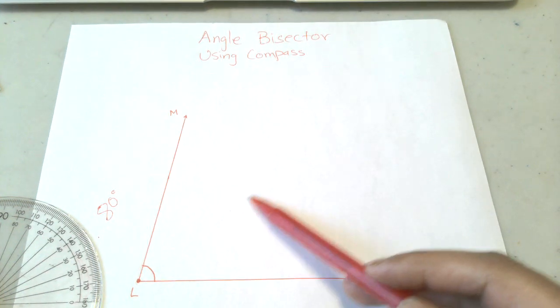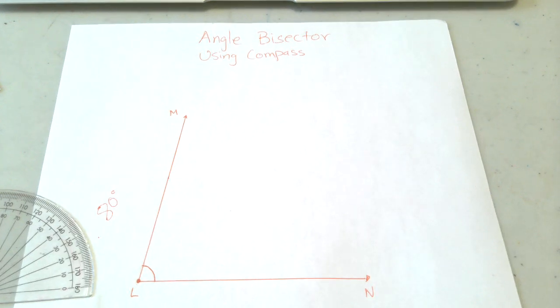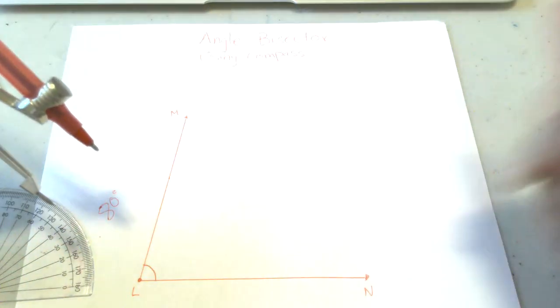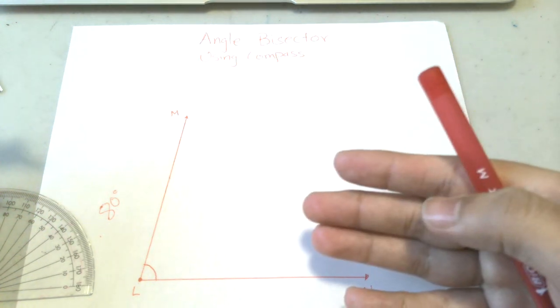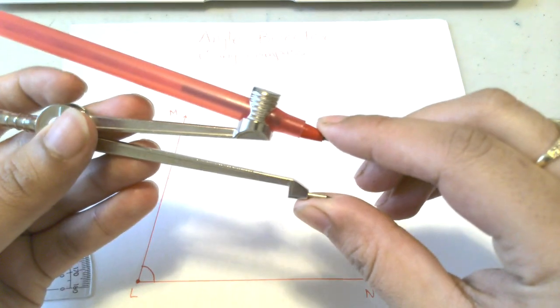Now my lesson is based on using the compass, so I'll be showing you how to bisect your angle using a compass. I'll even show you the angle would be 40 degrees because we're bisecting it.